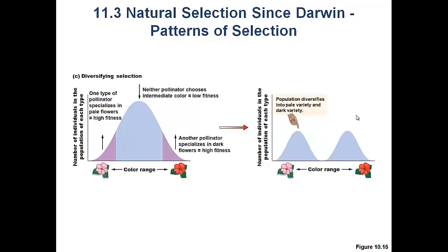The last case is called diversifying selection. In diversifying selection, the extreme phenotypes are selected for — the pink and the red are selected for, but the intermediate phenotype is not. This leads to a diversification of the phenotype: we have pink flowers and red flowers but very few intermediate ones. This is the least commonly observed type of selection in the natural world, but it may occur when there are two distinct food sources available. Beak size in birds is one example — if there are big seeds and small seeds but no intermediate-size seeds, big beaks and small beaks are favored but intermediate beaks are not.